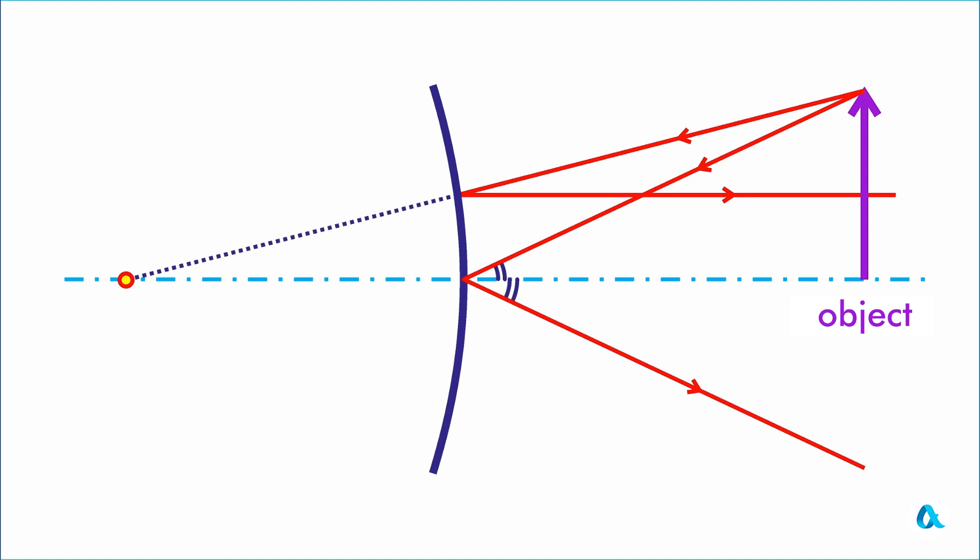Reflected rays diverge, but their extensions intersect behind the mirror, determining the position of the image. The image appears virtual, upright, and smaller in size compared to the object, as it is diminished due to the reflection process.